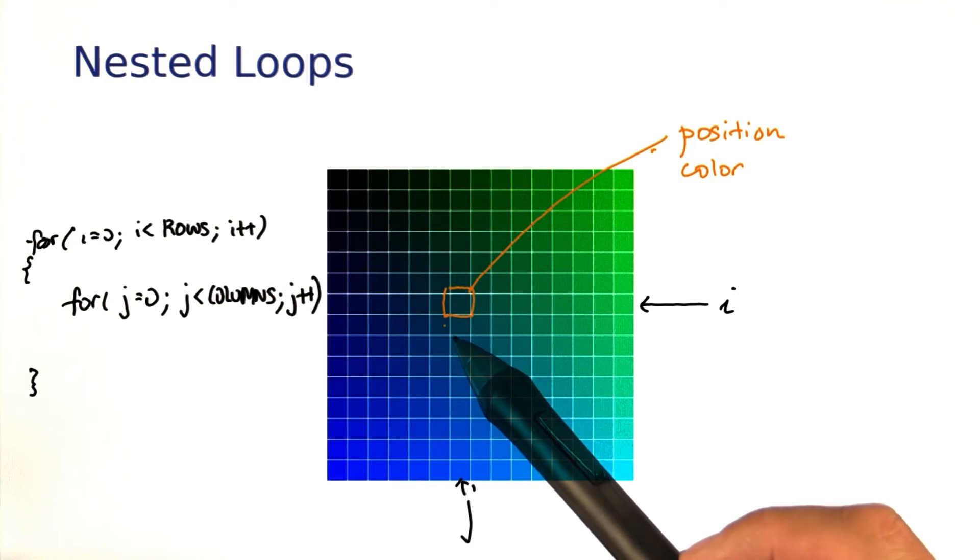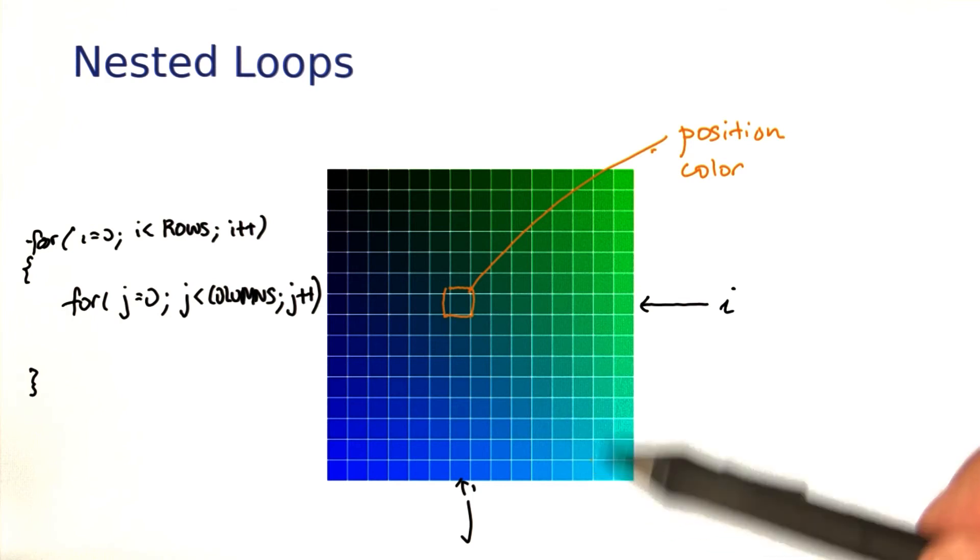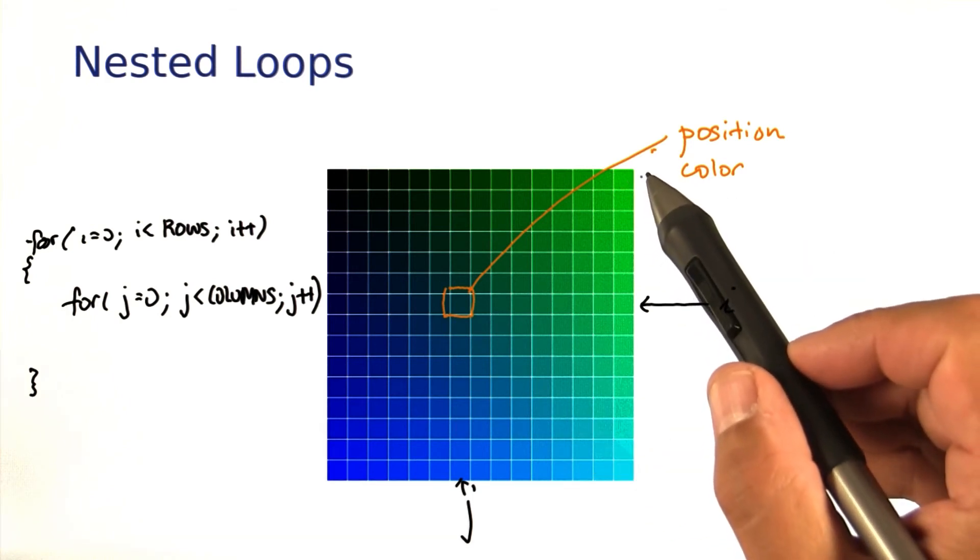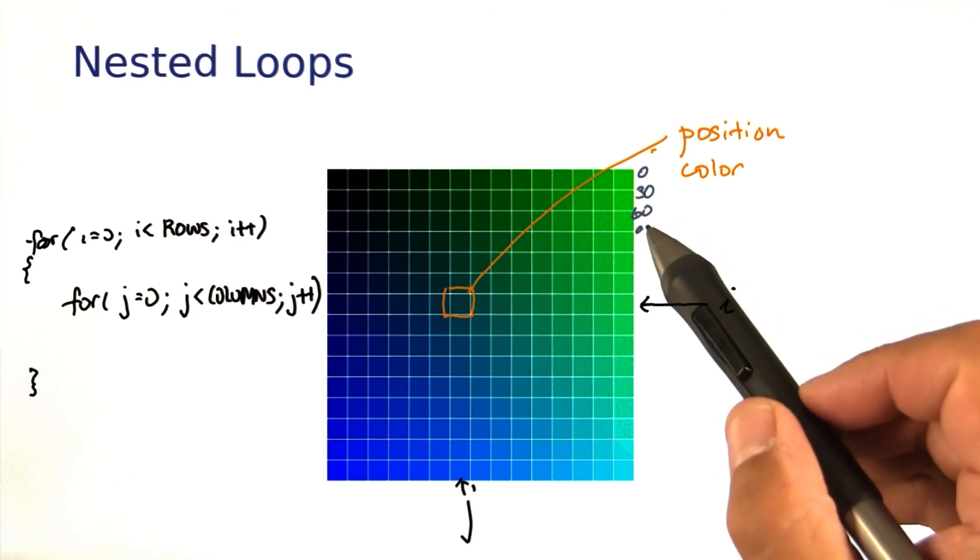Just keep in mind that as the row index i goes 0, 1, 2, 3, and so on, you want the y position to be 0, 30, 60, 90, and so on.